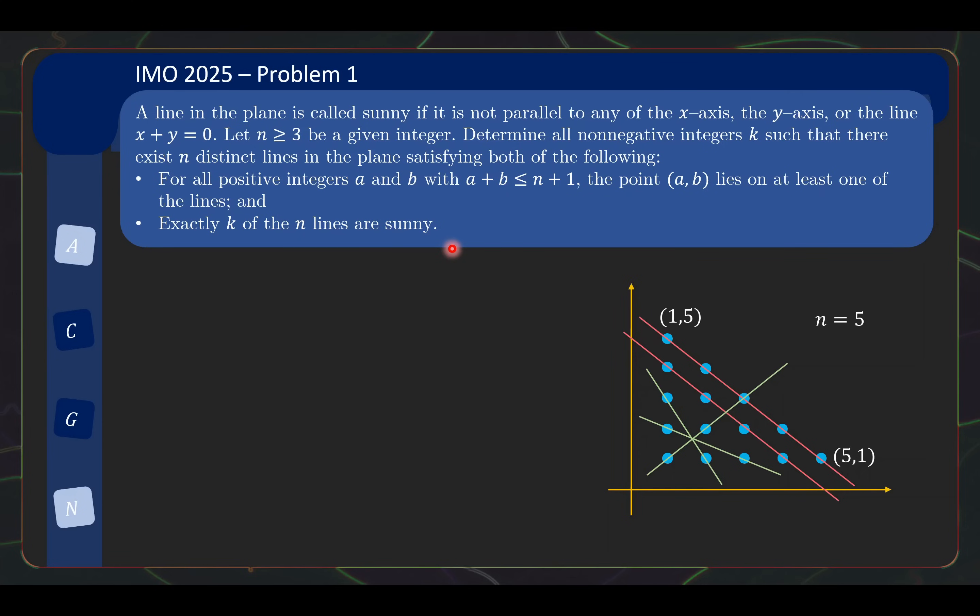So to rephrase or to summarize what the question is saying. First, we find n lines that cover the points. And what are the possible number of sunny lines? So over here, 5 lines cover the points and 3 is a possible number of sunny lines.